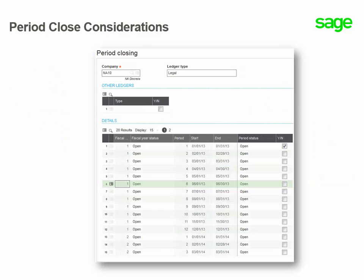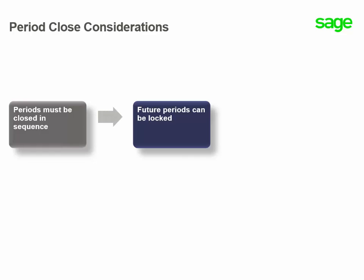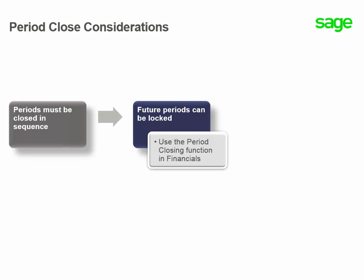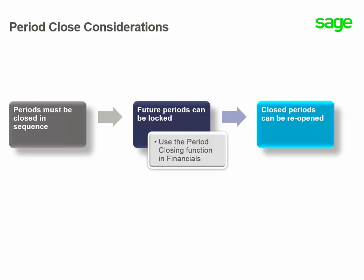Now, there are some other considerations as well. The periods must be closed in sequence. You can lock periods during the closing process to prevent errors in entry — there is a utility in financials to accomplish this. Finally, closed periods can be reopened; there is also a function in financials to accomplish this as well. Now you know the process, features, and have a better understanding of how to close periods.